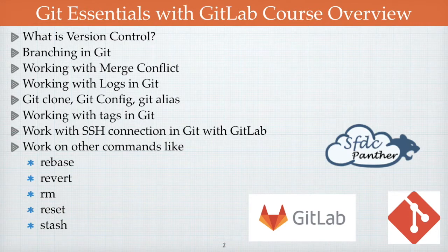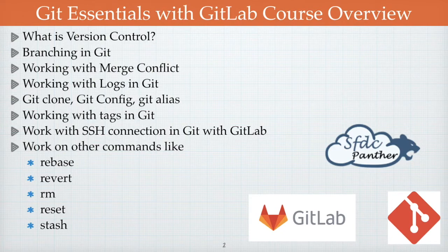Here is the structure of our course. In the very first video we are going to talk about what a version control system is, and we are also going to set up the environment so we can start working from the very next video. In the second video we are going to talk about what a branch is, what is the need of a branch in Git, and how we can effectively work with branches. There will be multiple hands-on exercises in that lecture as well.